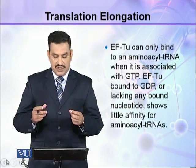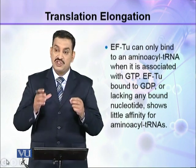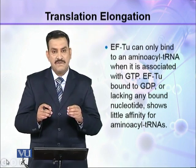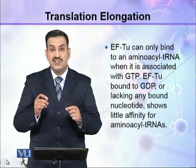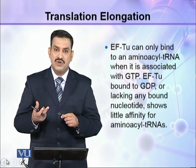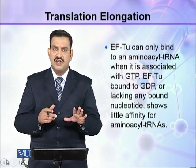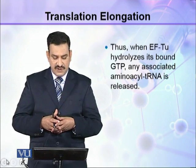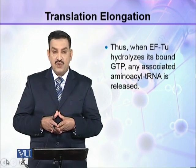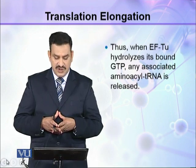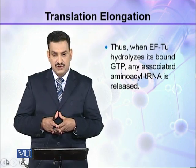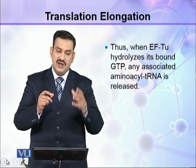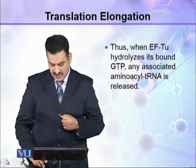EF-Tu bound to GDP or lacking any bound nucleotide shows little affinity for aminoacyl tRNA. So EF-Tu will only bind when associated with GTP; if EF-Tu has GDP — meaning GTP has been hydrolyzed — it will have no affinity and will not bind. Thus, when EF-Tu hydrolyzes its bound GTP to GDP, any associated aminoacyl tRNA is released.